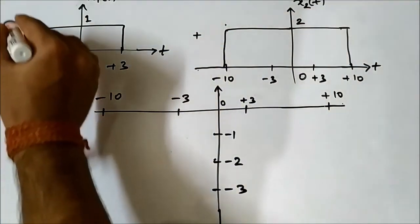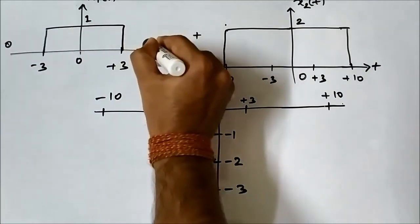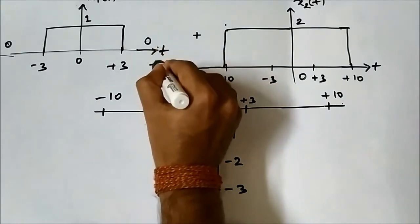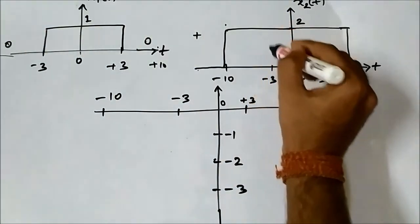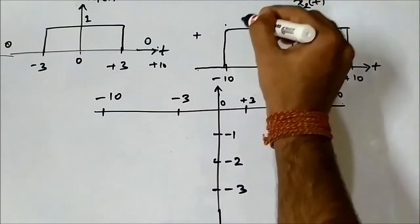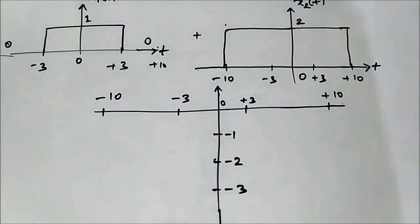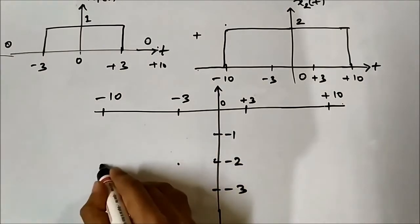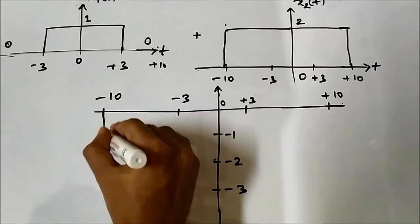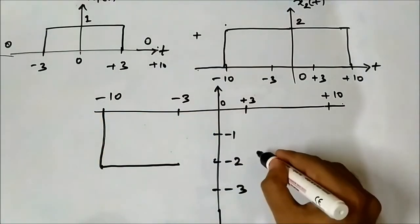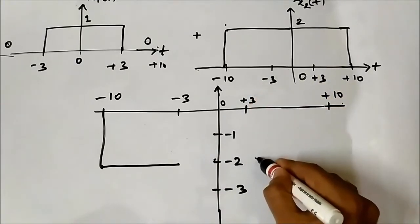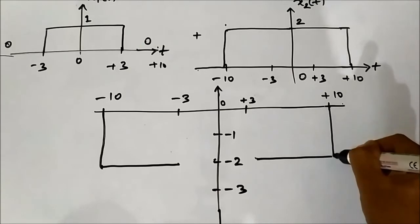So in between minus 10 to plus 10 in the outer intervals, x2(t) has amplitude 2. So the subtraction gives 0 minus 2, which is minus 2. From minus 10 to minus 3 and plus 3 to plus 10, the result is minus 2.